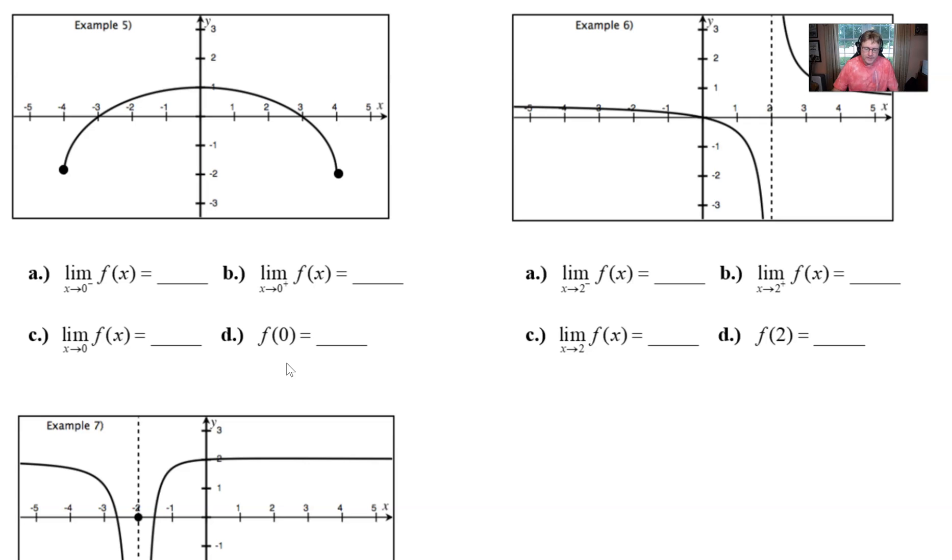So if we move into our first problem and I move my face out of the way so you can see example six, we see example five over here to the upper left. It doesn't really matter if you have an idea of what the equation would look like. If you're wanting to know I believe that's probably the top half of an ellipse. But we're gonna take that out of the picture and just focus on the graph that's given and find these individual limits.